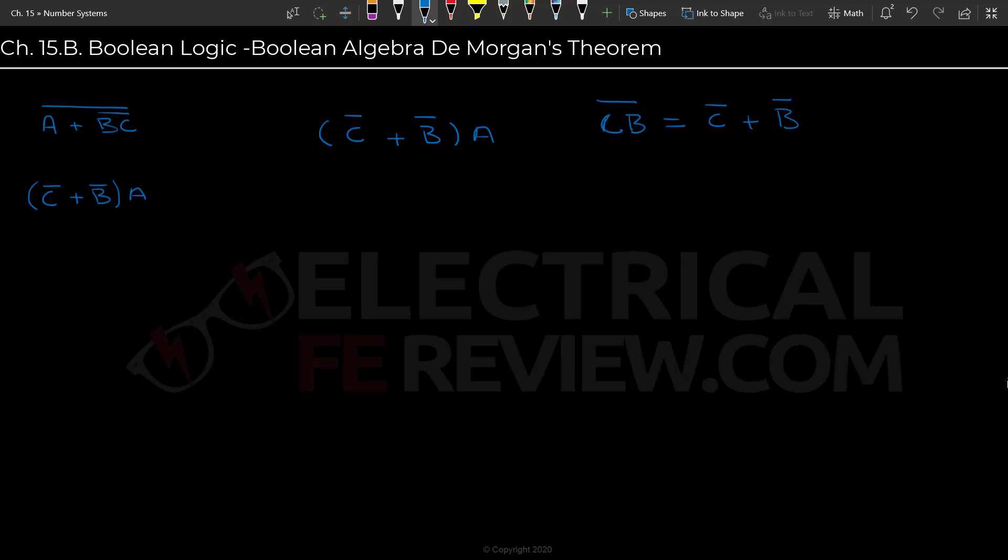And so I just wanted to demonstrate how you can go both ways. You can also do C NOT or B NOT is equal to C B NOT. So then we'll have C B NOT A.